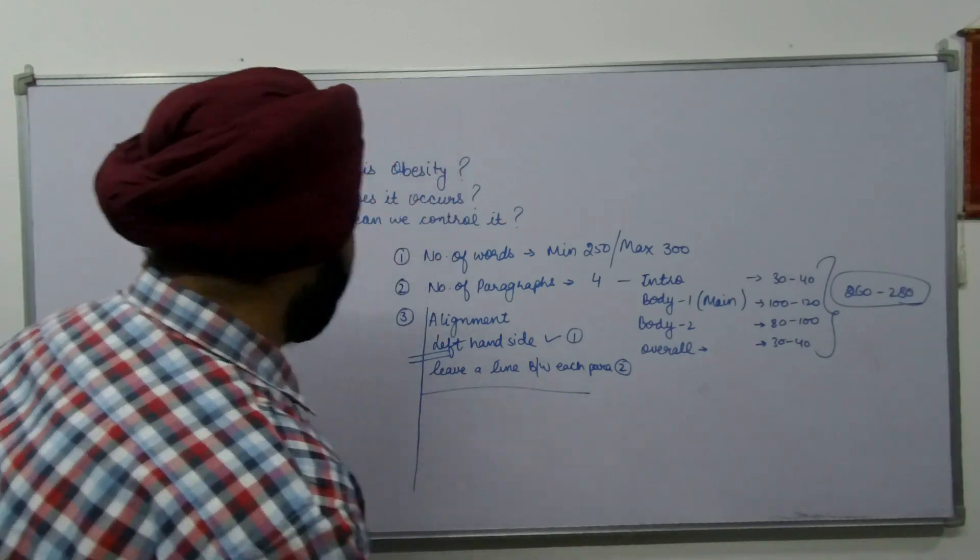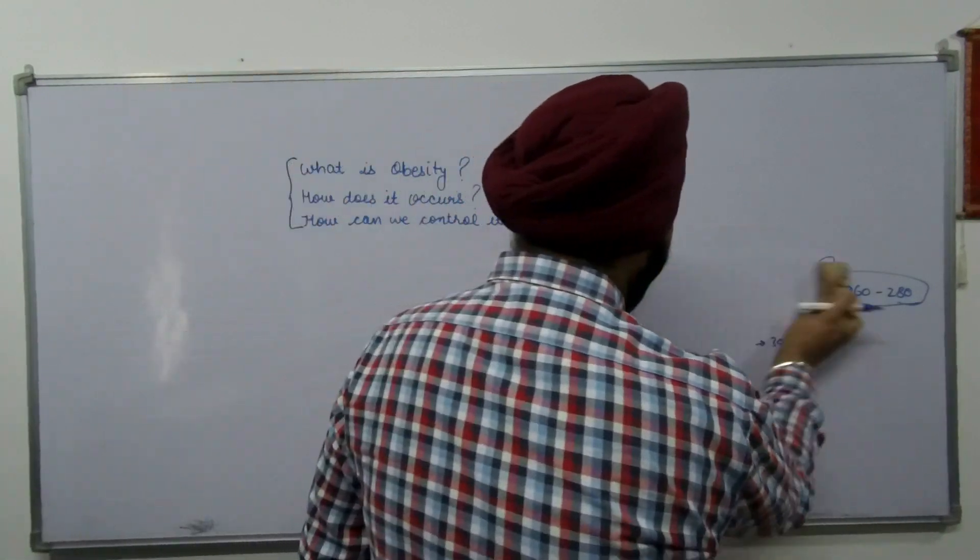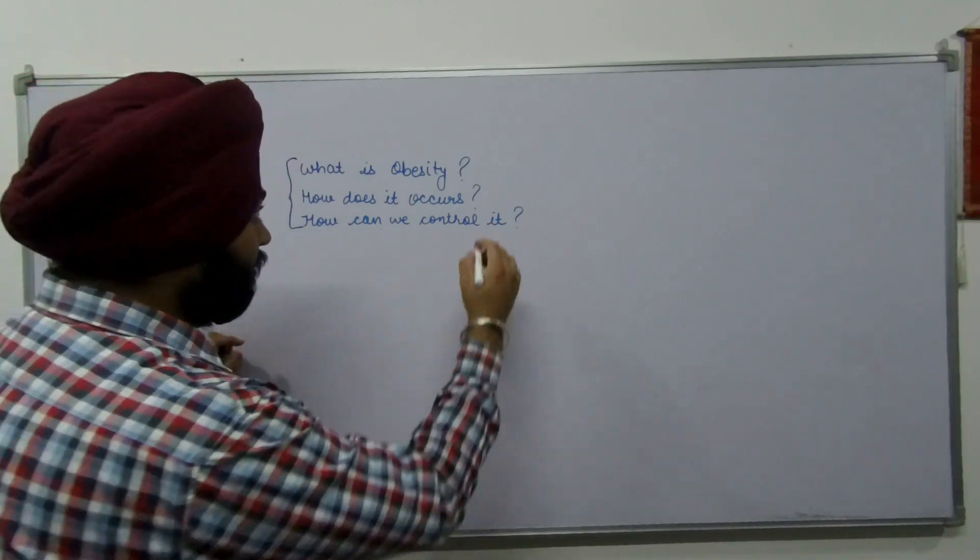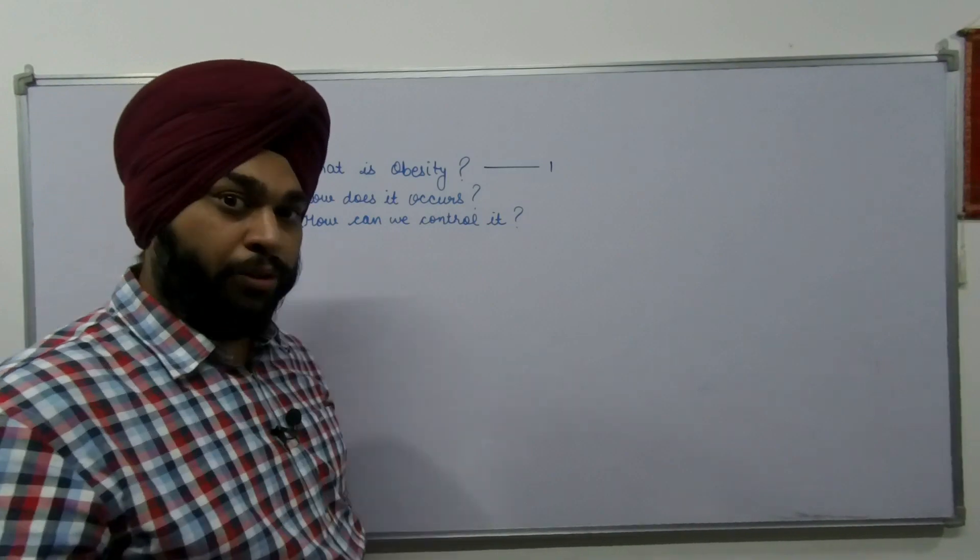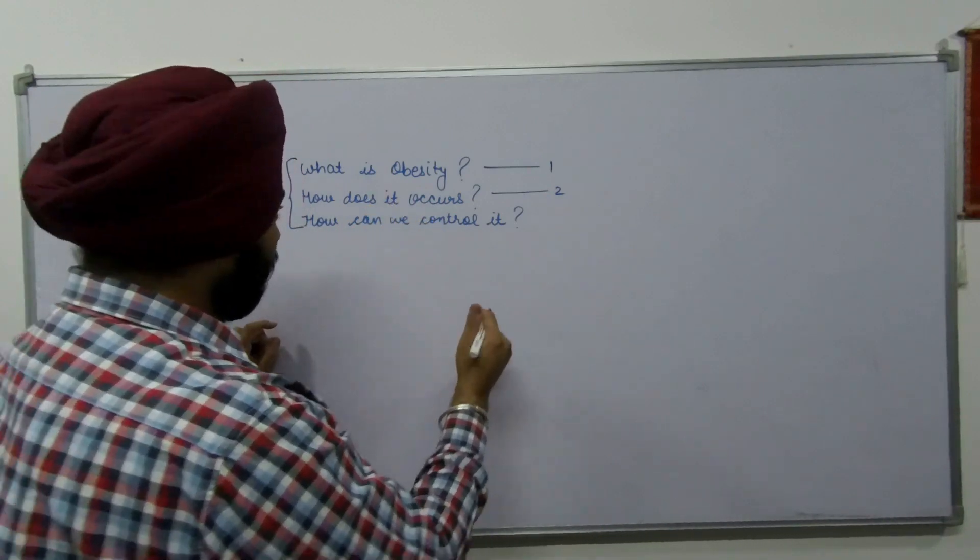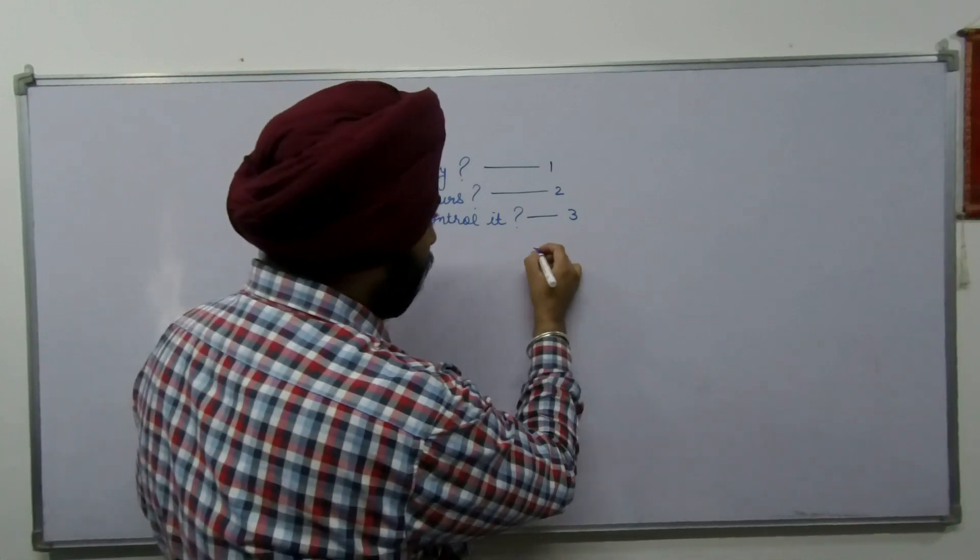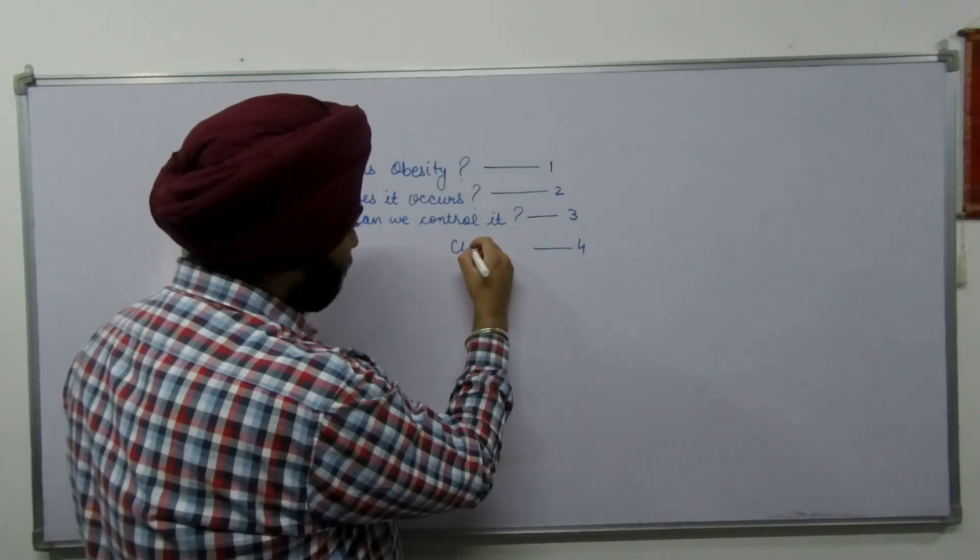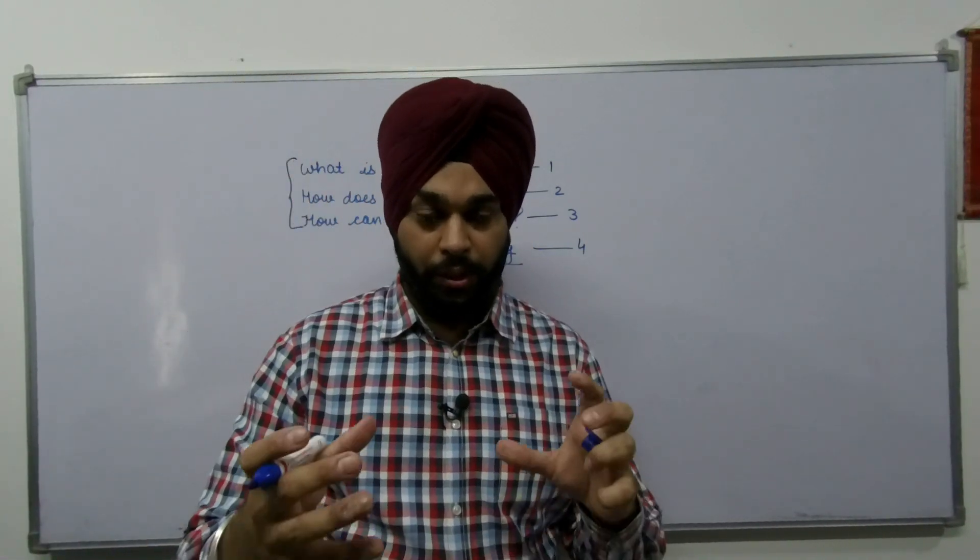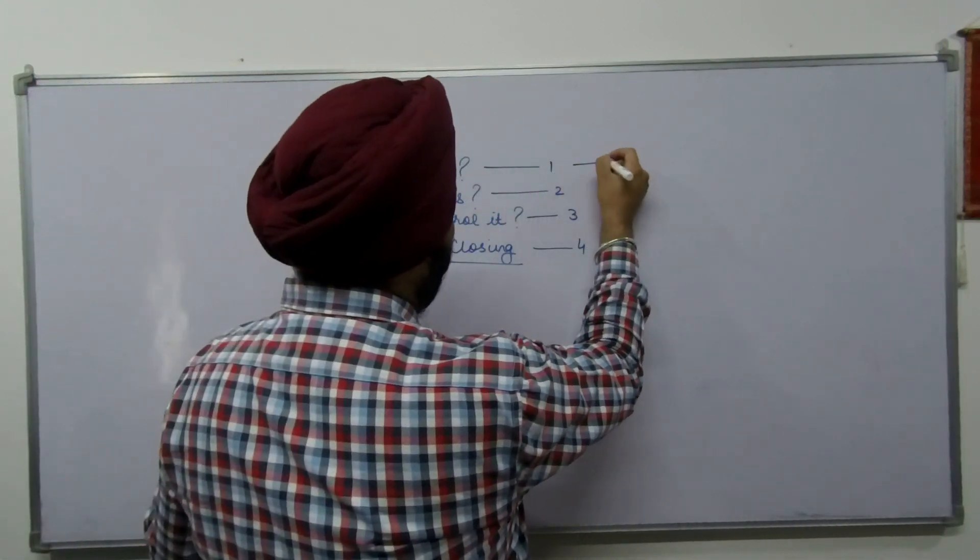As you can clearly see, in this essay we have three questions. The first one is what is obesity, the second one is how does it occur, the third one is how can we control it. This is going to be my first para where I will introduce obesity. The second para will be how does it occur, and the third one is the solutions, the remedies to control it. My fourth para will be closing. I have to pack the essay in the end, give a nutshell, a conclusion. So let's begin with para number 1: What is obesity?